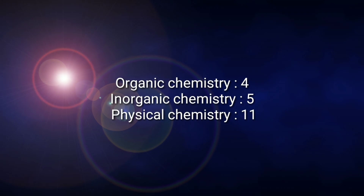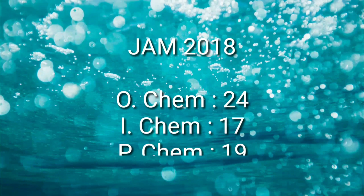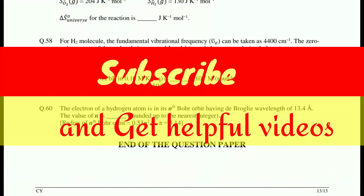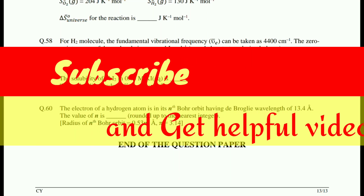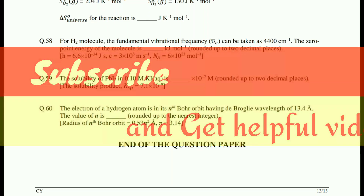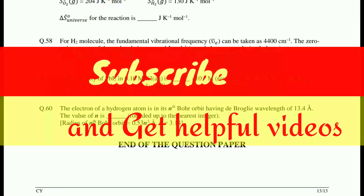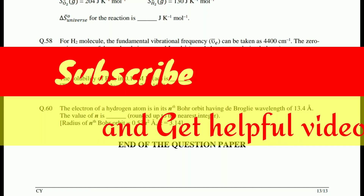So in Section C there are 11 physical chemistry questions, 4 organic chemistry questions, and 5 inorganic chemistry questions. Overall in IIT JAM 2018 there were 60 questions total — 24 physical chemistry questions, 17 inorganic chemistry questions, and 19 organic chemistry questions. So overall, physical chemistry is ahead of organic or inorganic chemistry. Keep watching, keep following, and keep making yourself better. Thank you, thanks for watching.